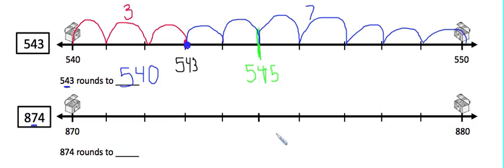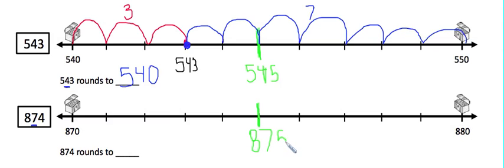So then we're going to locate the midpoint on our number line — that's this part right here, halfway in between both numbers. I know that the midpoint in between 870 and 880 would be 875. Next, I need to locate the number 874 on the number line. I know that 874 is one less than 875, so it would be located right here.